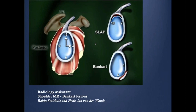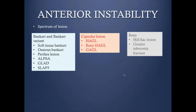Two spectrums of pathology can affect the labrum. We'll touch on each one briefly: the superior labral abnormality, classified as SLAP lesions — superior labral anterior and posterior — involving the superior labrum with anterior or posterior extension. And anterior instability affecting the anterior inferior part of the labrum, which is the Bankart variant. The best approach is to describe the abnormality rather than try to fit it into one of these categories.